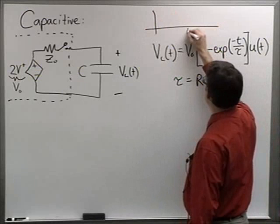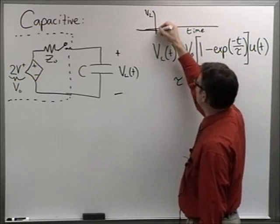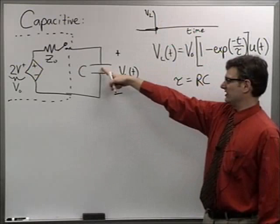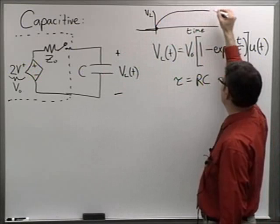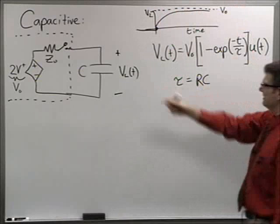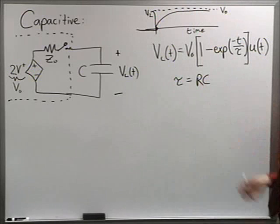If I look at this as a function of time: nothing before time equals zero, nothing immediately afterwards because the capacitor initially looks like a short circuit, but it quickly charges up asymptotically to the final value V₀ — or twice the impinging voltage. That's the mathematical expression of what we just saw on the TDR.